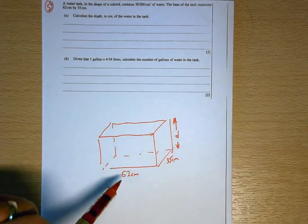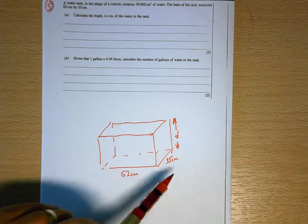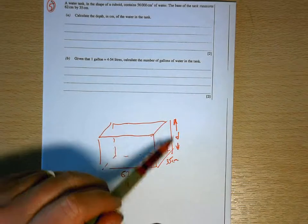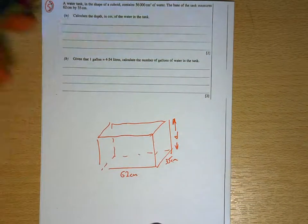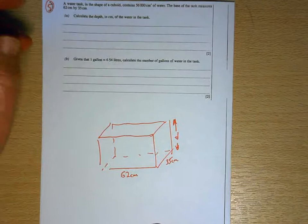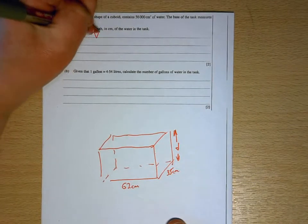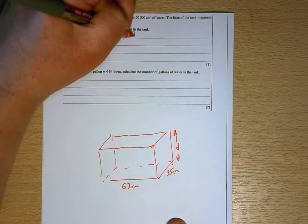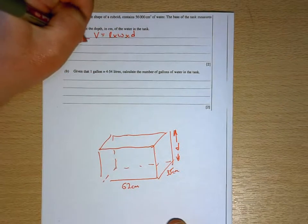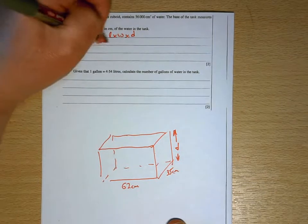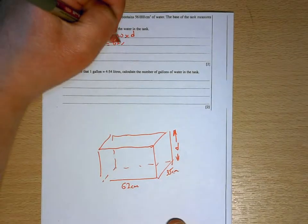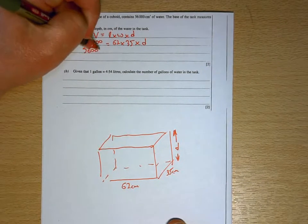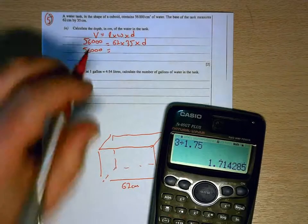So there's our depth. Now we know that in order to work out the volume of a cuboid, it would be length times width times height. So 62 times 35 times that height or depth there would give us the volume. And we know that the volume is 56,000 centimeters cubed. So the volume would be length times width times depth in this case. So 56,000 would be 62 times 35 times d.